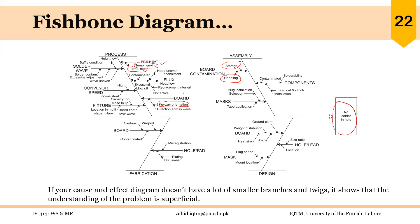One important point: if your cause and effect diagram doesn't have many smaller branches and twigs — as you can see in this figure there are many smaller branches — it shows that the understanding of the problem is superficial and you don't really understand it in detail. You may need help from people in relevant departments to identify root causes. A good cause and effect diagram has many smaller branches and twigs.